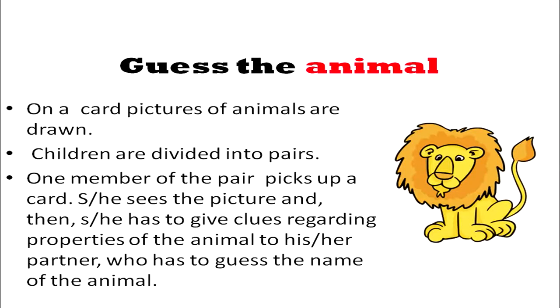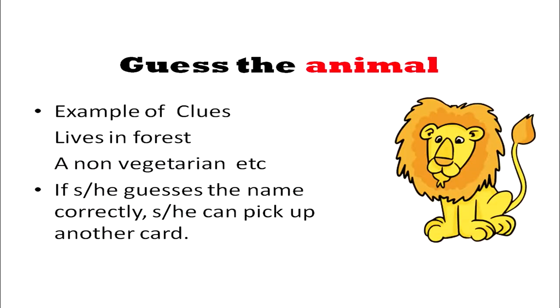If you collect puzzles and riddles from magazines and newspapers, you can always have a kitty ready which can be used in school. Here is a simple game for elementary school level called 'Guess the Animal.' You have cards where pictures of animals are pasted. Divide the children into pairs. One has the card and gives clues regarding which animal is on the card — orally, without showing the picture or naming the animal — and the partner has to guess the name. Clues can be like: it lives in forest, it is non-vegetarian, etc. If the partner guesses correctly, they pick up the next card and the game continues.